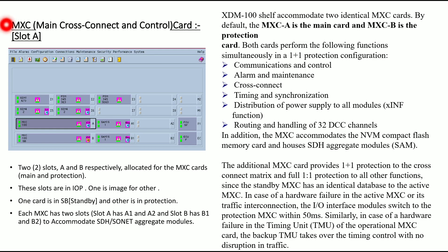The MXC is the main cross-connect and control card, located in slot A and slot B. MXC stands for multiplexer cross-connect and control card. Two slots A and B are respectively allotted for the MXC cards, and these slots are in 1+1 protection — one card is active and the other is in standby.